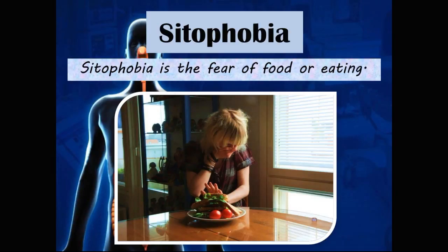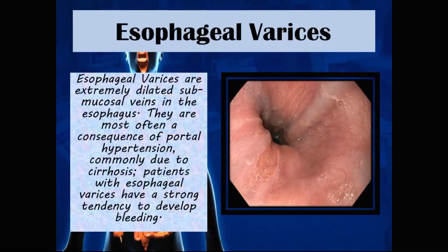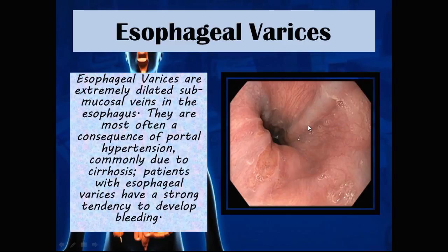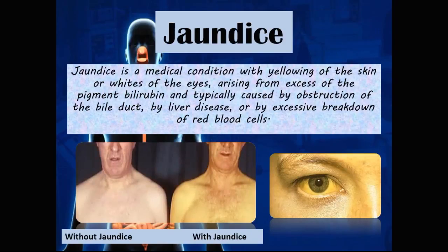Cytophobia is the fear of food or eating. Esophageal varices are extremely dilated submucosal veins in the esophagus, most often a consequence of portal hypertension, commonly due to cirrhosis. Patients with esophageal varices have a strong tendency to develop bleeding, as these superficial dilated veins are prone to abrasion when food passes through the esophagus. Patients with esophageal varices will frequently present with melena, as this represents an upper GI bleed.